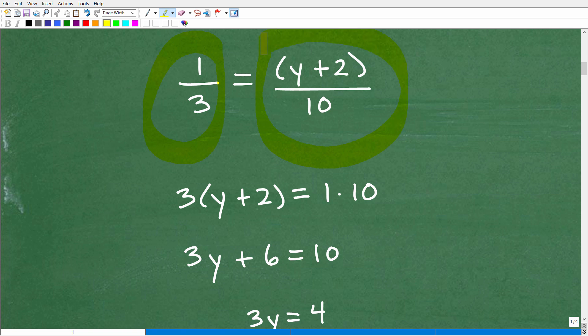So to solve this proportion, I'm trying to figure out what value of y is going to make this fraction over here, if I replace this y with some number, it's going to make this fraction equal to this fraction over here, one third. Okay, so how do I do that? Well, we're going to use the cross product, we're going to go this times this is equal to this times this. So three times y plus two, I can write it this way, three times y plus two, one times 10 is one times 10.